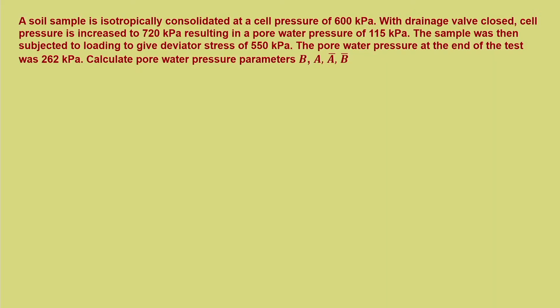In this lecture we will work out a problem related to pore pressure equations. The problem given is: a soil is isotropically consolidated at a cell pressure of 600 kilo Pascal, so sigma 3 equals 600 kilo Pascal. Please note that it is consolidated, so if it is consolidated there will be no pore pressure — pore pressure will be equal to zero. We will understand this when we discuss triaxial testing in the next lecture.